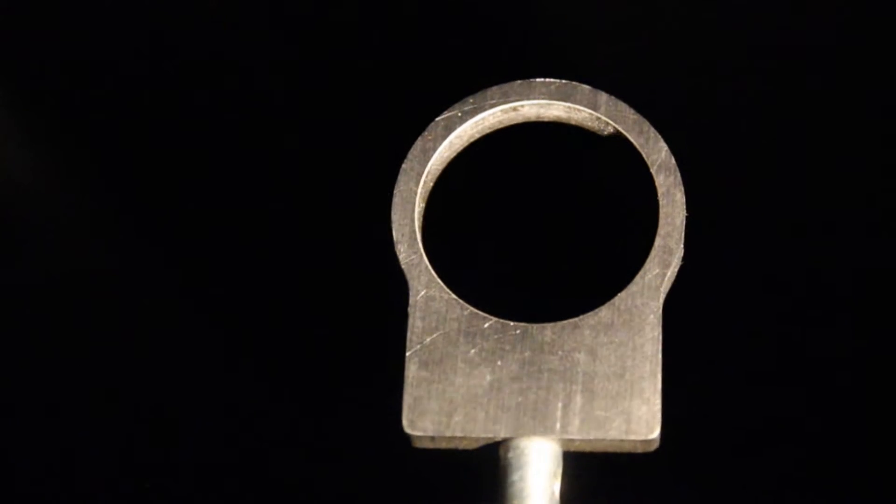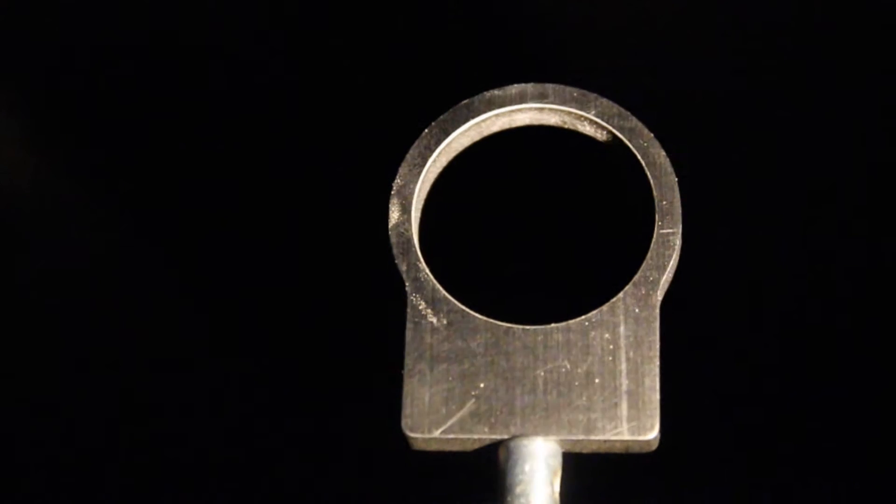A recoil lug is a device designed to stiffen up the action bed, protect the stock, and protect the action screws. So how does it do that?